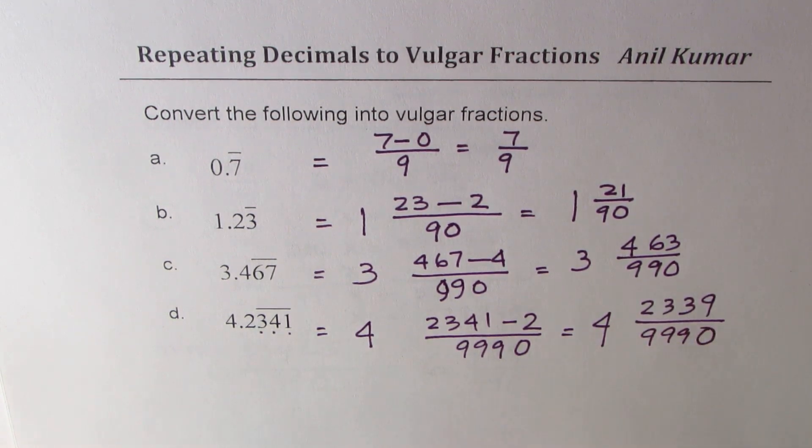You could verify using calculators - calculators not a bad idea. So let's do the last one verification. 2339, we'll just do 2339 divided by triple 9 0 is equal to what.